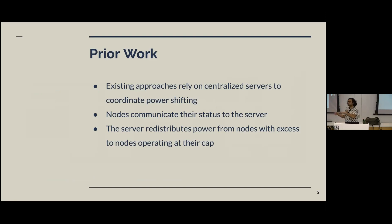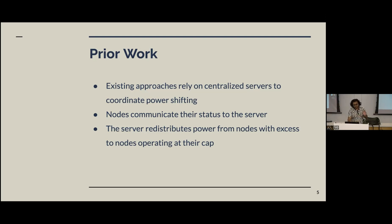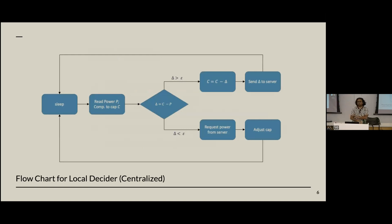Existing approaches in dynamic allocation focus on centralized approaches. They construct a central server. All nodes actually running workloads communicate their power status to this server, and the server handles all the coordination — it tells servers to lower their cap or increase their cap and handles all of this movement. This is a pretty simple flowchart for a node running a workload and the feedback loop it follows.